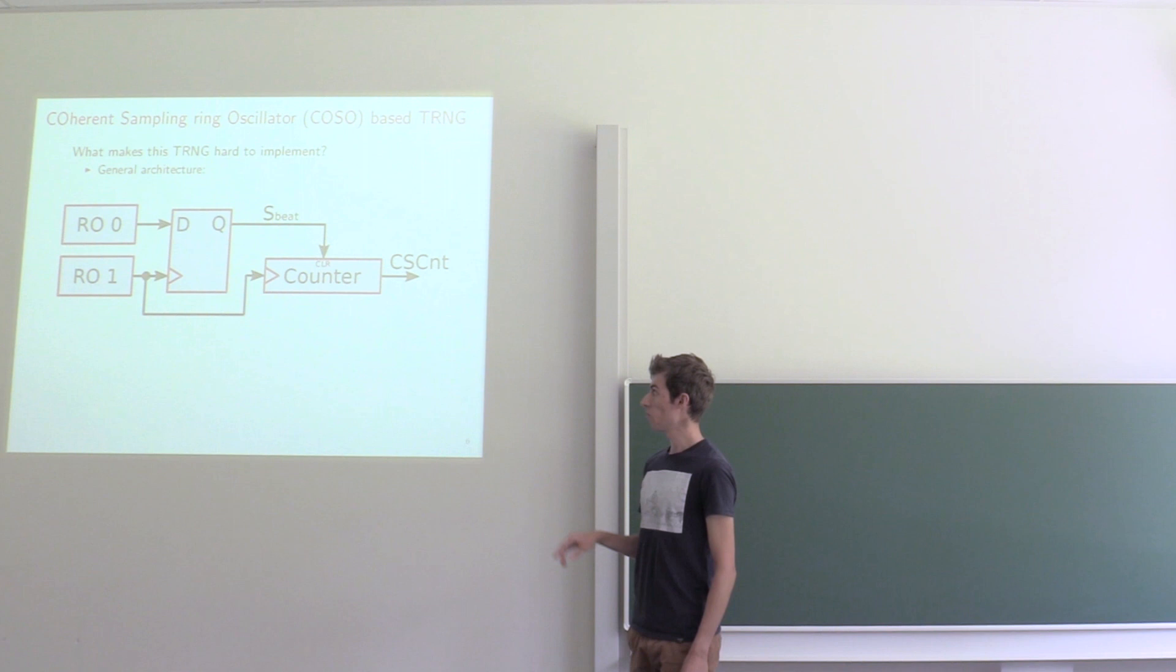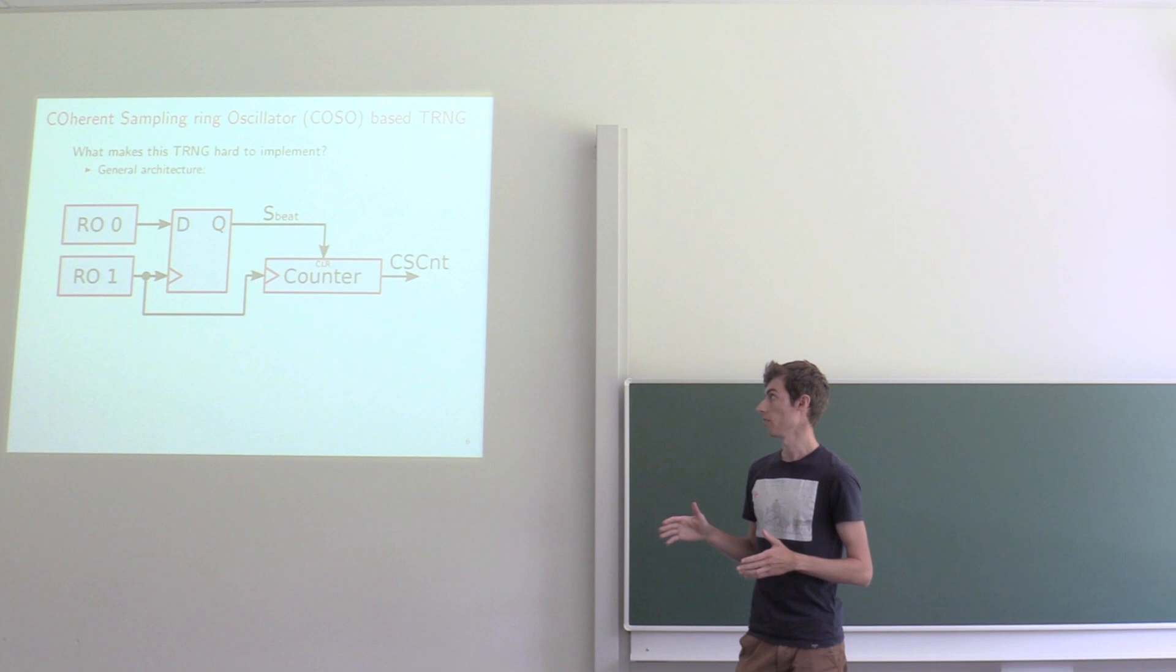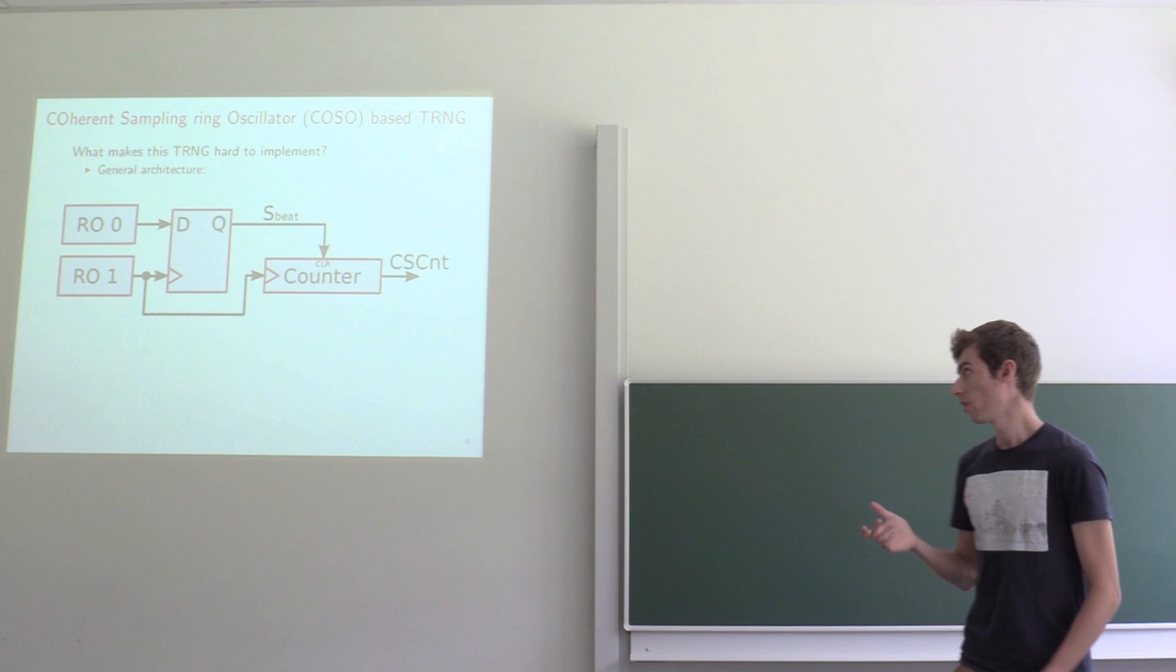And out of this D-flip-flop comes a low frequency beat signal. The period length of this beat signal is counted using a counter which is clocked by the first ring oscillator.